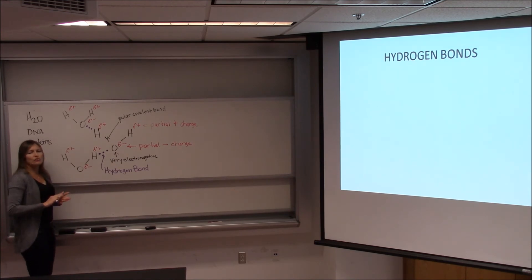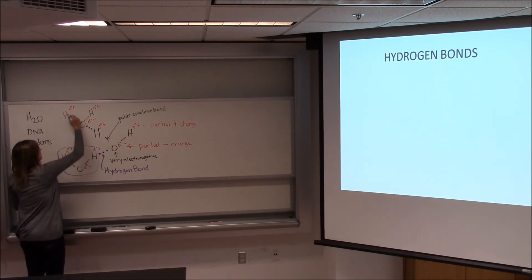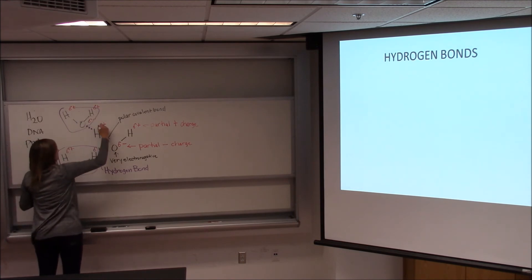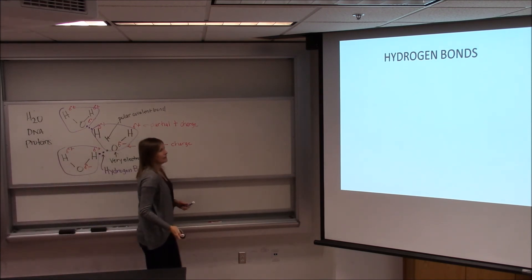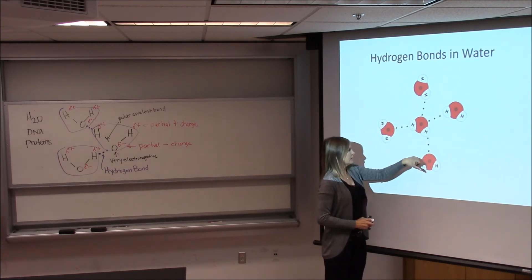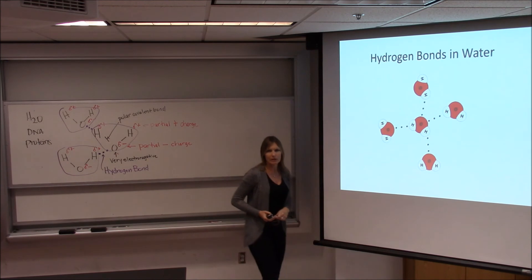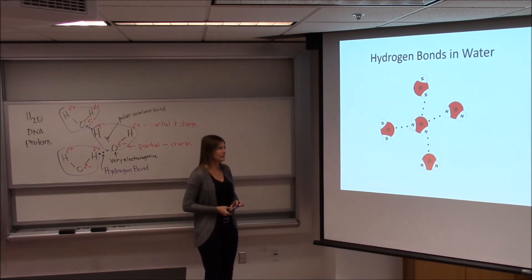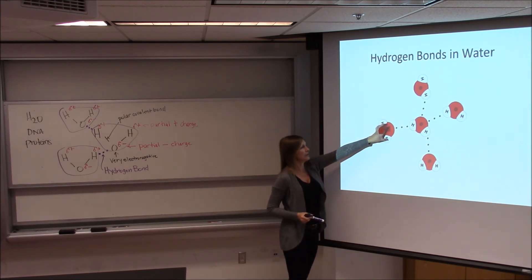Hydrogen bonds do not hold oxygen and hydrogen together to make a water molecule. Each individual water molecule is held together by polar covalent bonds, and hydrogen bonds are what hold neighboring water molecules together. So you have a water molecule, and another, and another — neighboring water molecules held together by hydrogen bonds, while polar covalent bonds hold the individual water molecule together.